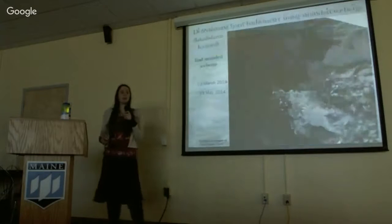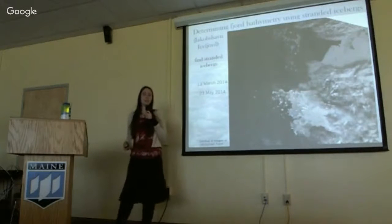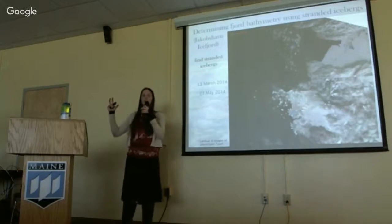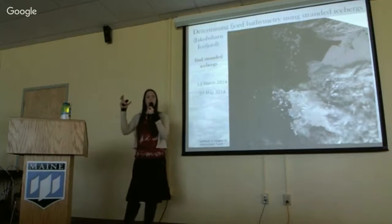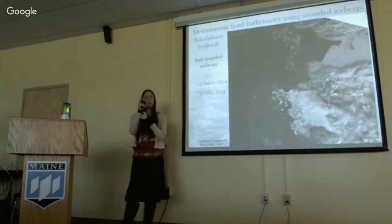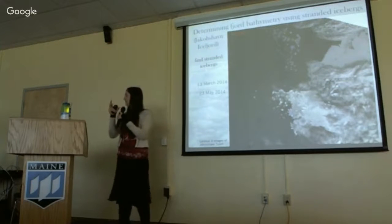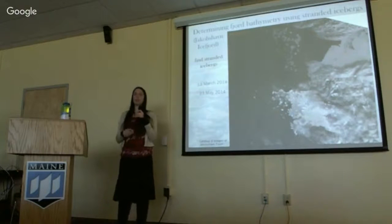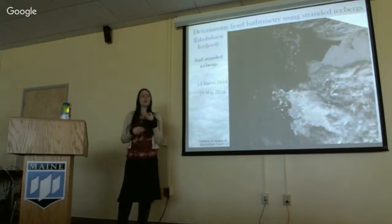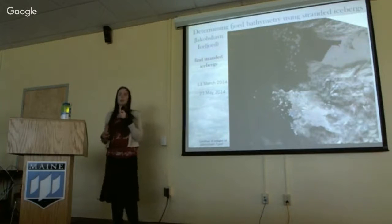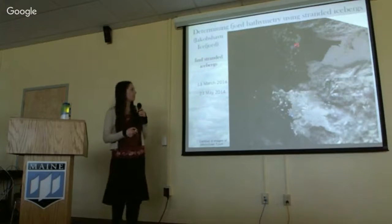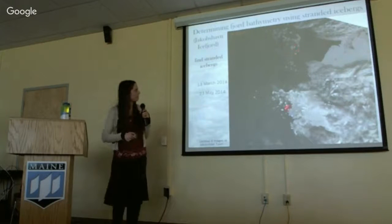What my work does is use stranded icebergs, because as we know, most of an iceberg is below the surface of the water. If an iceberg is floating along and comes to a relative bathymetric high, it is going to get stuck on that bathymetric feature. By looking for locations where icebergs have become stranded, we can determine locations where there are relative bathymetric highs in the symmetry of a given fjord. Here you can see an iceberg that I've outlined in blue — it's right there.